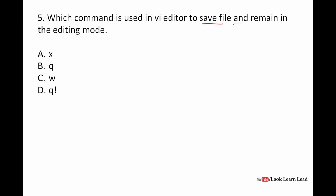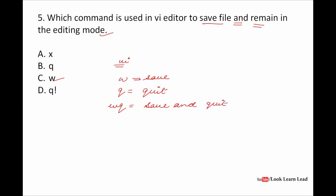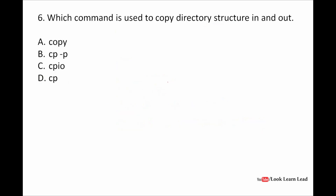Which command is used in the vi editor to save a file and remain in the editing mode? The answer is w. In vi editor: w is for save only and remain in editing mode; q is for quit; wq is for save and quit; and q! is for quit without saving. Since the question asks to save and remain in editing mode, the answer is w.